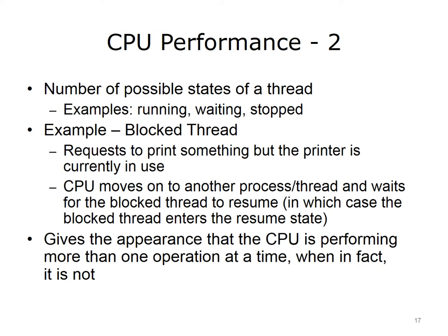In the interim, while the given thread is blocked, the CPU moves on to another process or thread and waits for the blocked thread to resume. In this case, the blocked thread enters the resume state so that it can print. This process makes it appear that the CPU is performing more than one operation at a time, when in fact, it never does so.